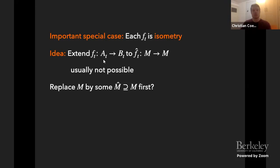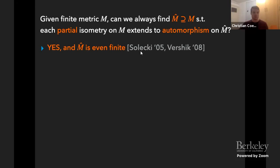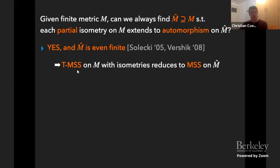However, in general you cannot expect to extend such isometries globally. One idea is to first extend the metric space M to a greater metric space so that we can extend our isometry to a global isometry of that greater space. The key question is: given some finite metric space M, is it always possible to find a superspace M-hat such that every partial isometry on M extends to a global isometry on M-hat? This is indeed possible — it was known since about a hundred years ago, and 15 years ago it was shown that if M is finite, then M-hat is also finite.